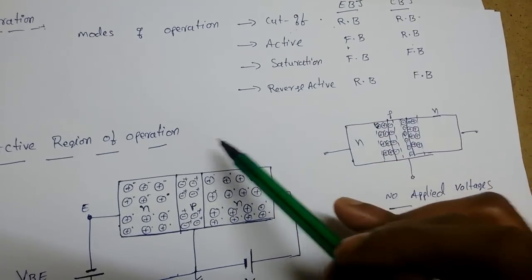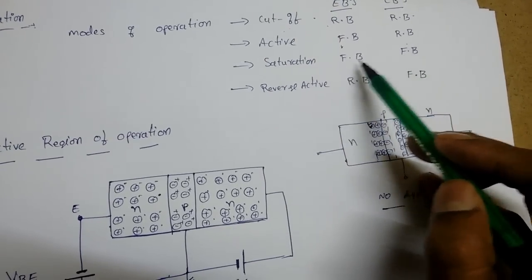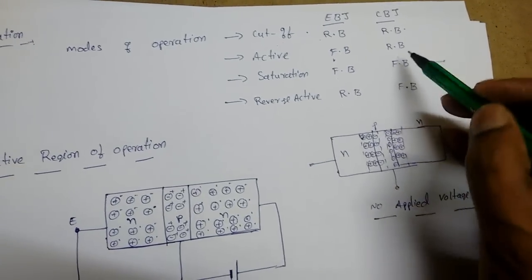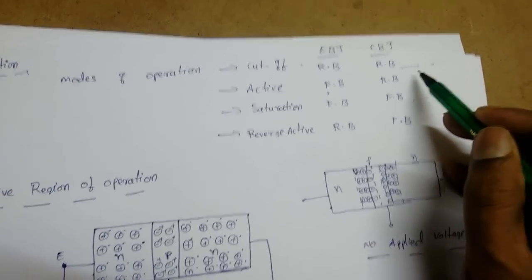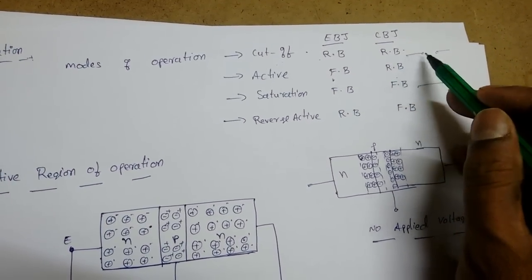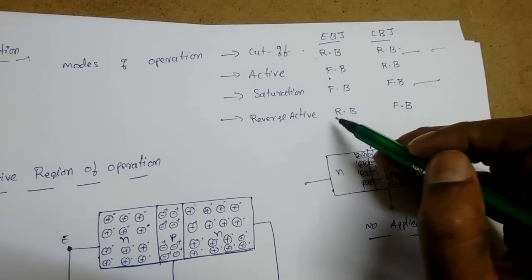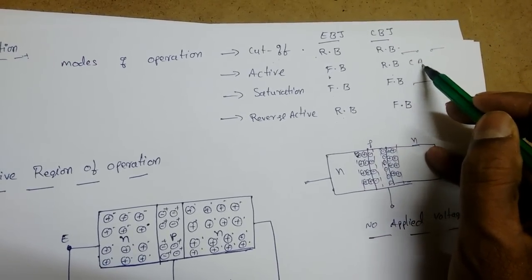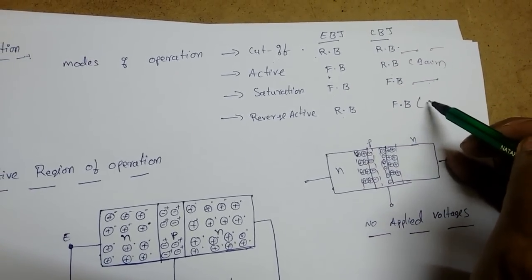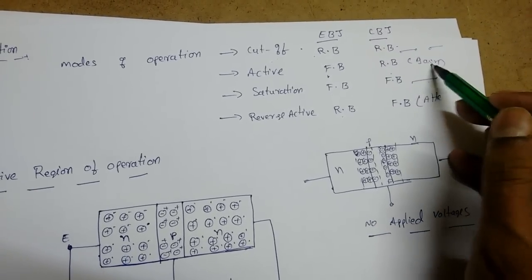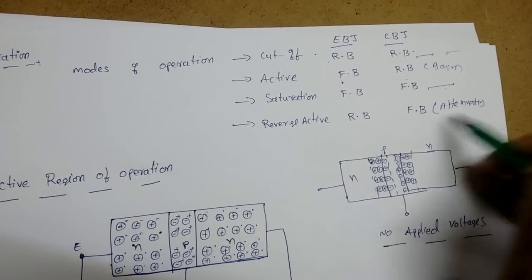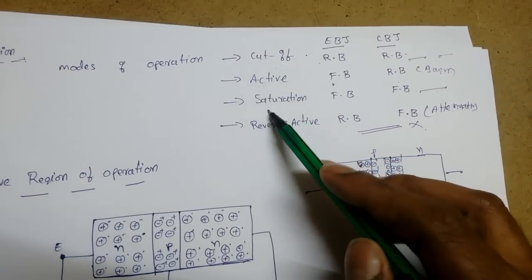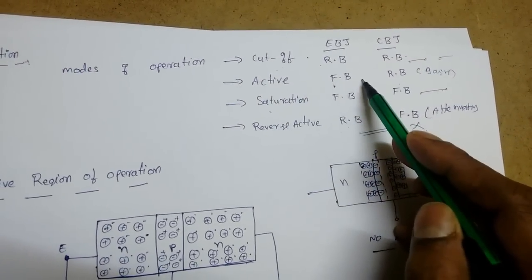If both junctions are forward biased, it is saturation mode — like a closed switch. Cut-off mode is like an open switch and saturation is a closed switch. In active mode we get gain (amplification); in reverse active mode we get attenuation, so reverse active is generally not used. Cut-off and saturation modes are used for switching, while active mode is used for amplification.